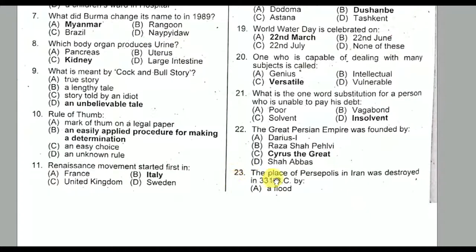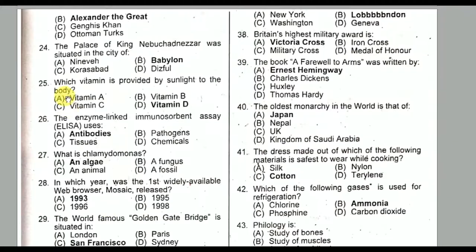Question number twenty-three: The palace of Persepolis in Iran was destroyed in 331 BC by Alexander the Great. Option B is the correct option.